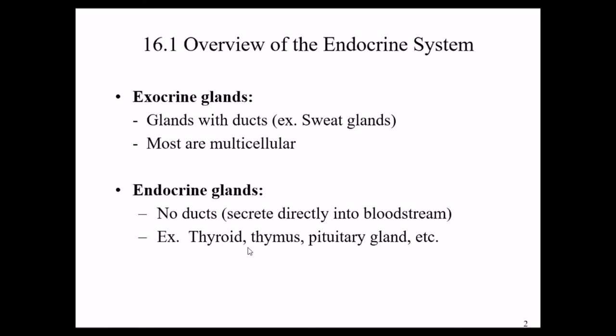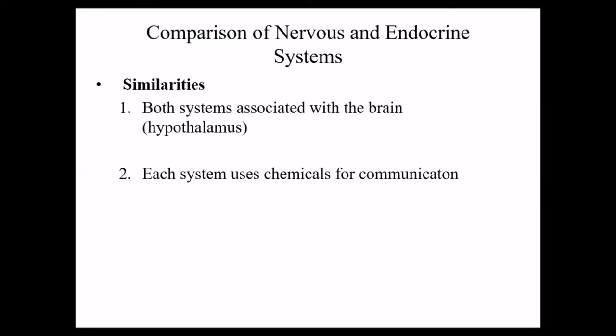Some examples of endocrine glands we'll look at are the thyroid, thymus, and pituitary. This chapter also compares and contrasts the nervous system and the endocrine system. You've just covered the nervous system in 168, so that should be fresh in your mind. Both systems have some association with the brain, and that connection stems from the hypothalamus. The hypothalamus is an important control region and also produces hormones that drive much of what goes on for the endocrine system. Additionally, both systems use some type of chemical messenger to relay information.